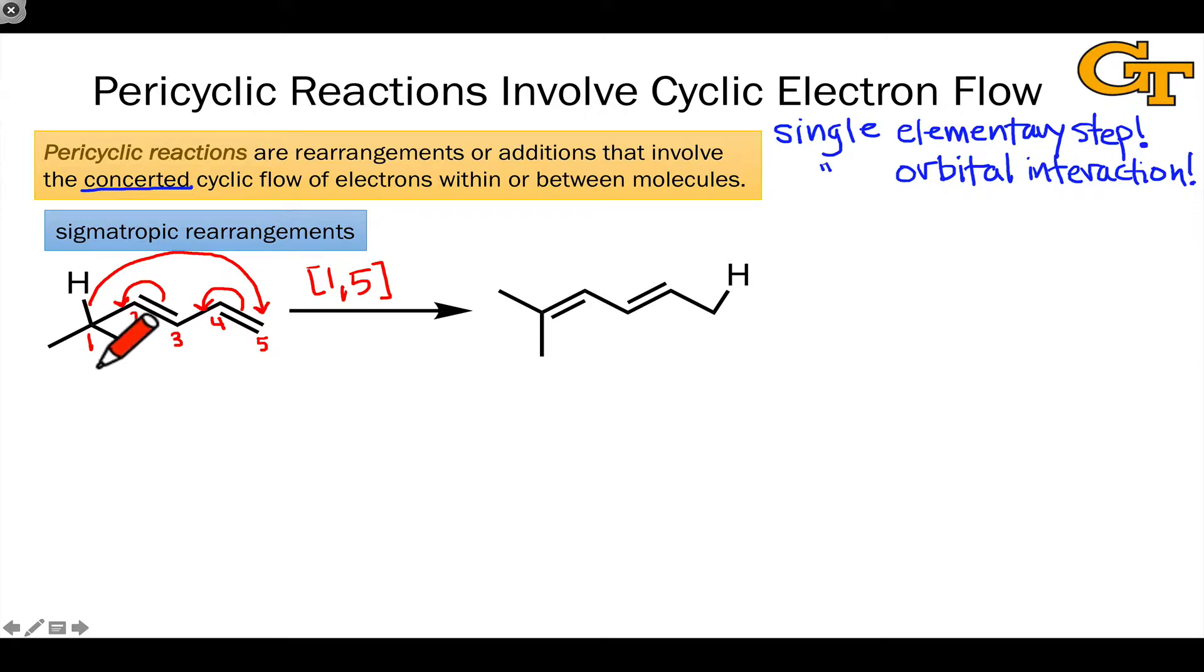Electrons find their way back to carbon 1 from carbon 5 through electron flow through the pi system. The key to a sigmatropic rearrangement is that a bond, a sigma bond, for example the CH bond that I'm highlighting here, is migrating across a pi system, as I'm highlighting here in blue.